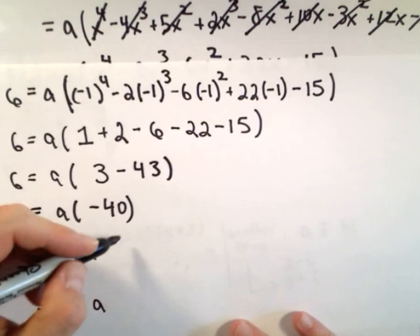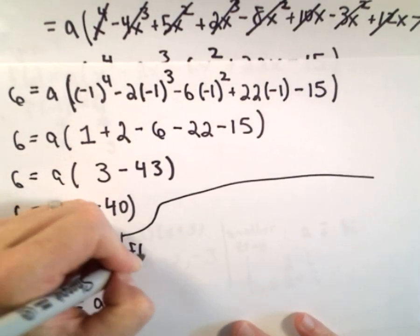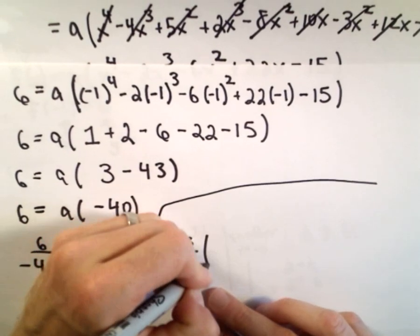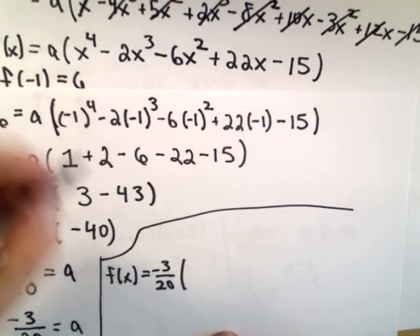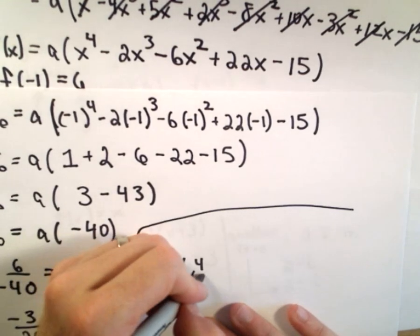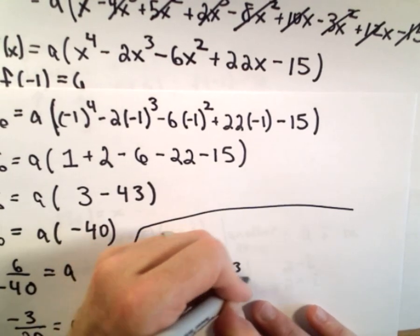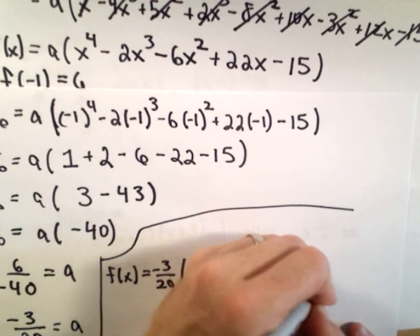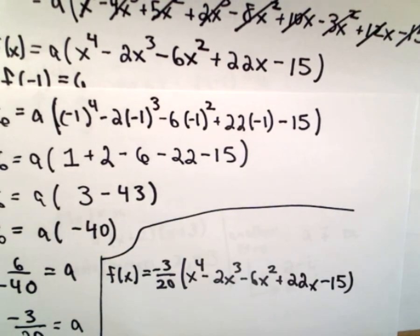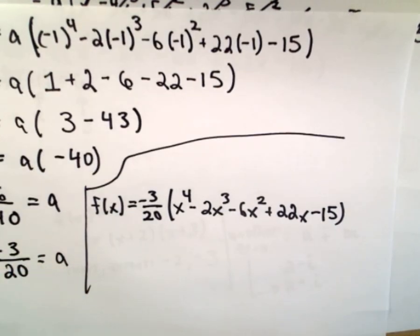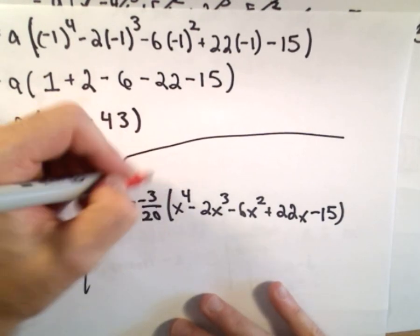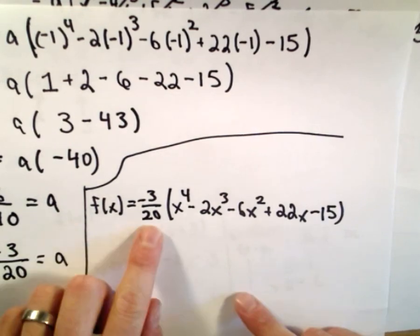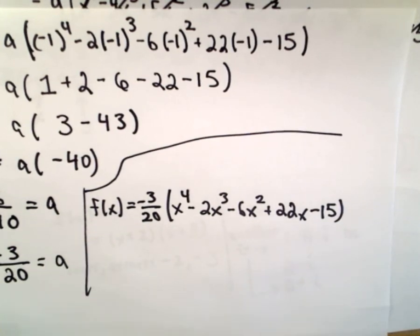We now have our solution. The polynomial is f of x equals negative 3 over 20 multiplied by x to the fourth minus 2x cubed minus 6x squared plus 22x minus 15. If you want to, you can distribute the coefficient out front, but I'm going to leave it in this factored form.